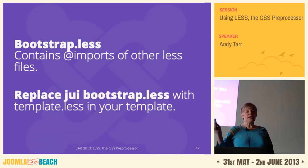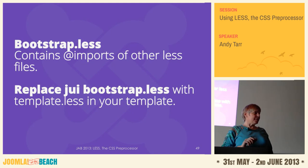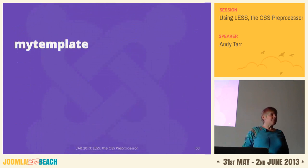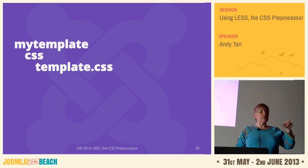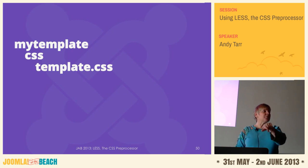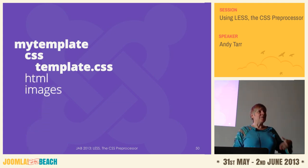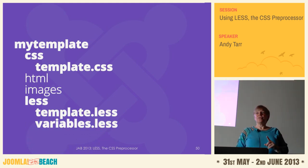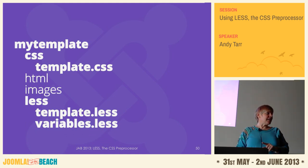The Bootstrap.less file contains imports of all the other LESS files. What you want to do is replace the JUI Bootstrap.less with one in your template. In your templates folder, you've got your MyTemplate folder with a CSS folder - that's where you'll end up with a template.css file after compiling. You'll have an HTML folder possibly, images folder, and a less folder. You'll want two files in that: the template.less file and the variables.less file. And then of course your index.php file.